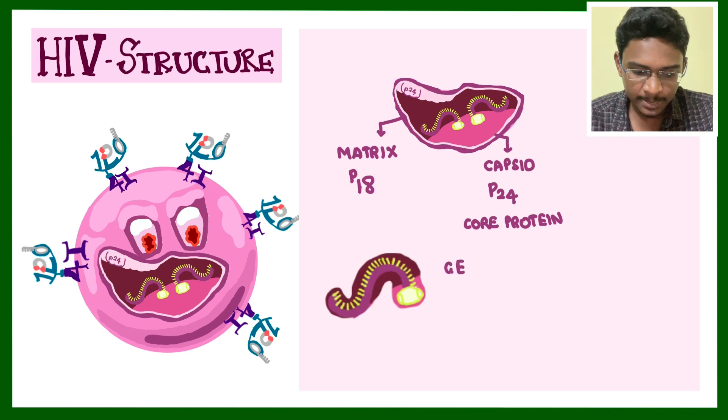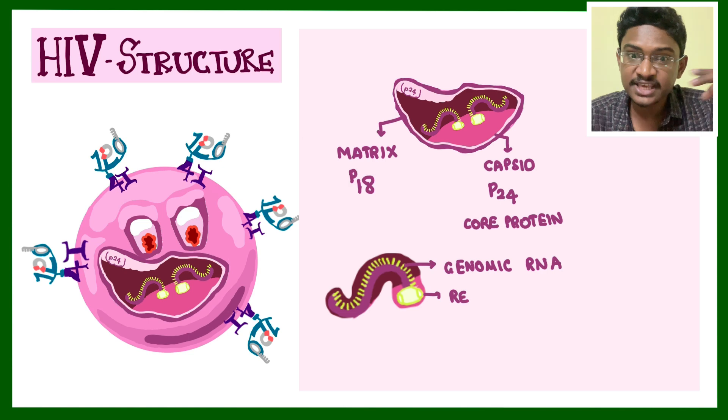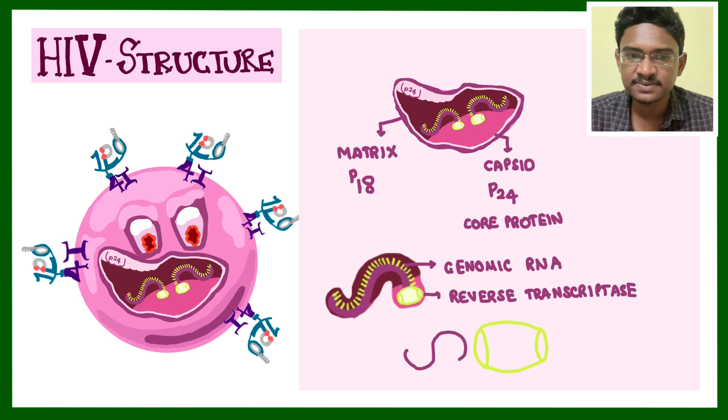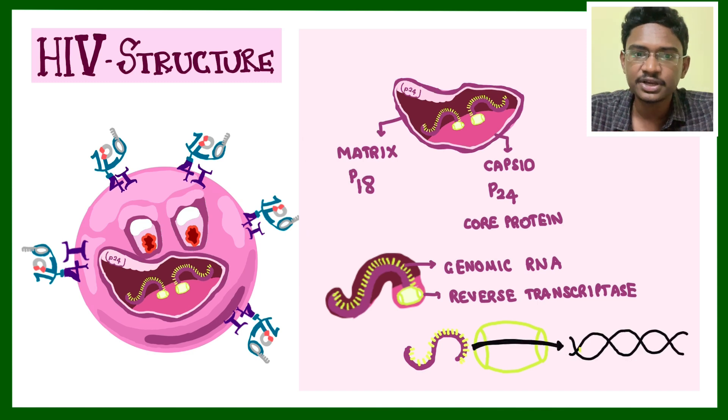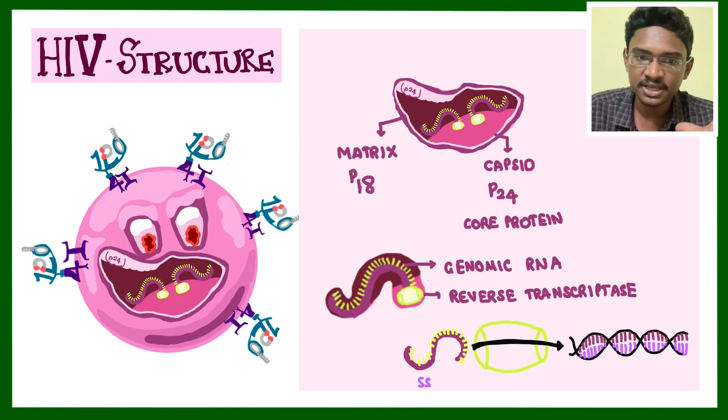There are two single-stranded RNAs present, and it has one barrel called reverse transcriptase. Whenever you push one RNA into this barrel, it will convert it into DNA. Transcription is reversed. Usually DNA to RNA is transcription, but here RNA to DNA happens, this is reverse transcription.